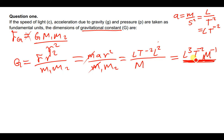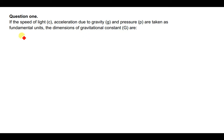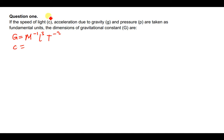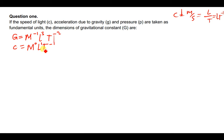Now let us find the dimensions for C, the speed of light. Speed has units of meters per second, so this is L/T, which can be written as L·T⁻¹. Since there is no mass component, we raise M to power 0. So the dimensions for C are M⁰·L¹·T⁻¹.